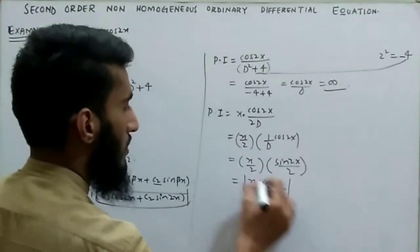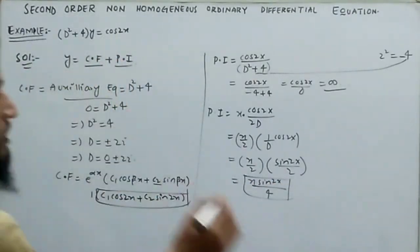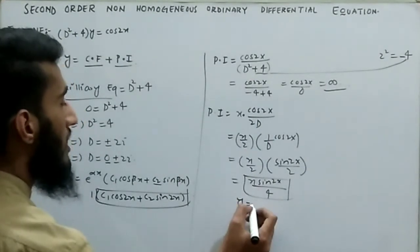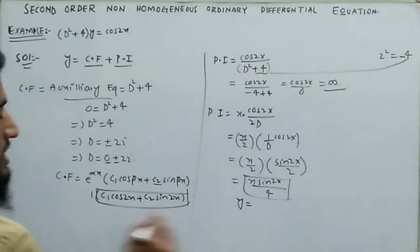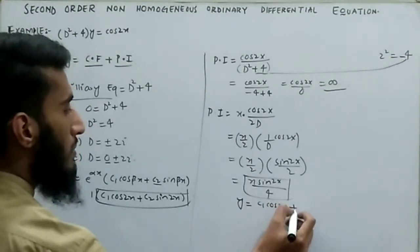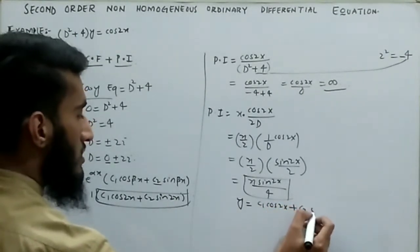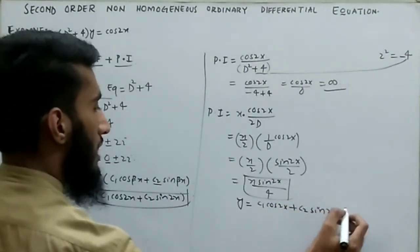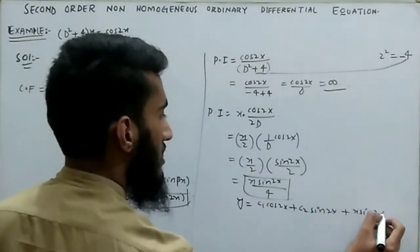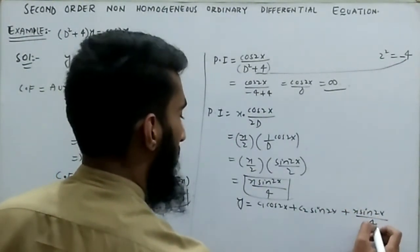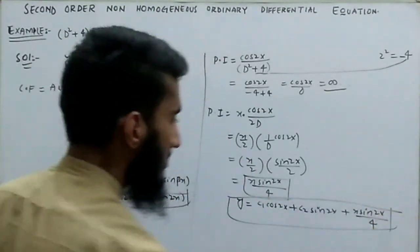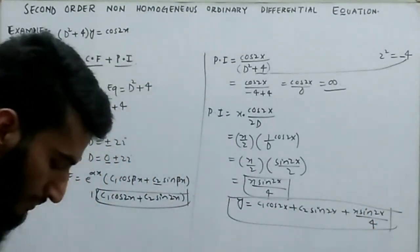This is the required particular integral. Therefore, the complete solution to this non-homogeneous differential equation is: y = c₁ cos(2x) + c₂ sin(2x) + x·sin(2x)/4. This is the required solution.